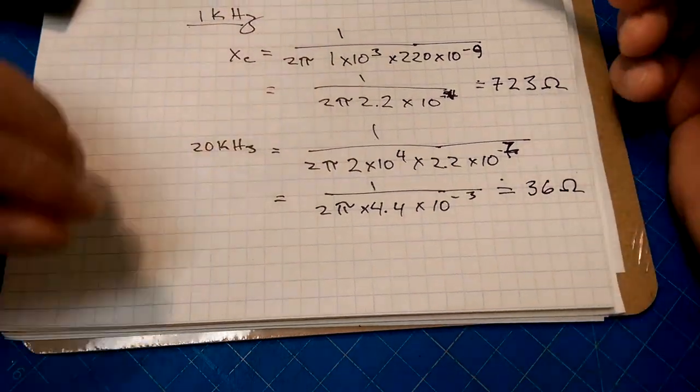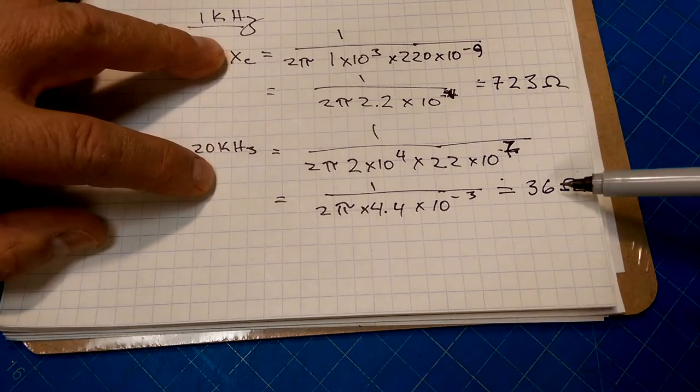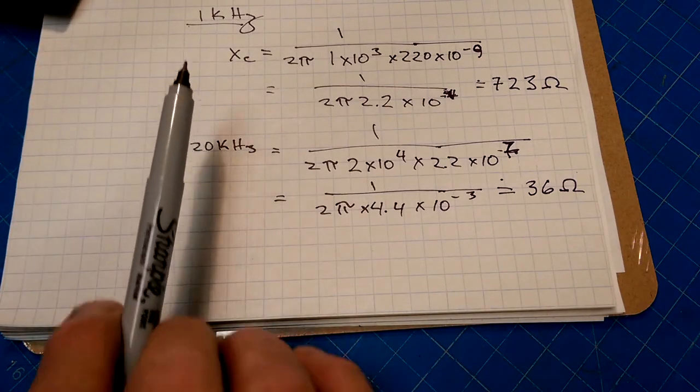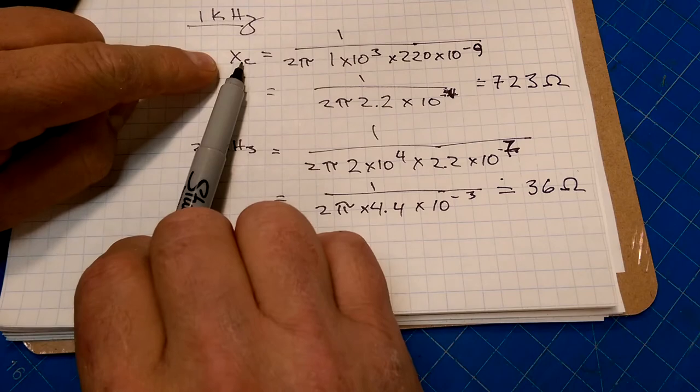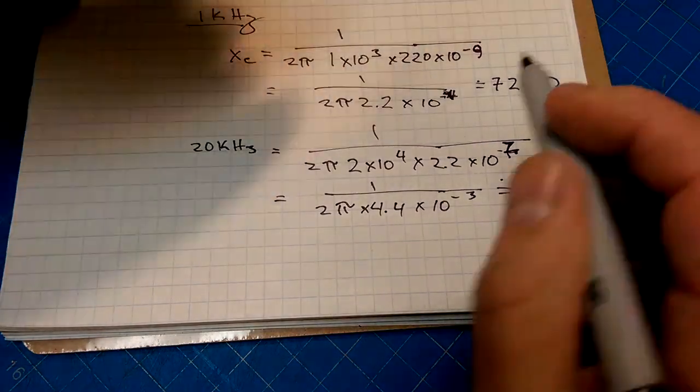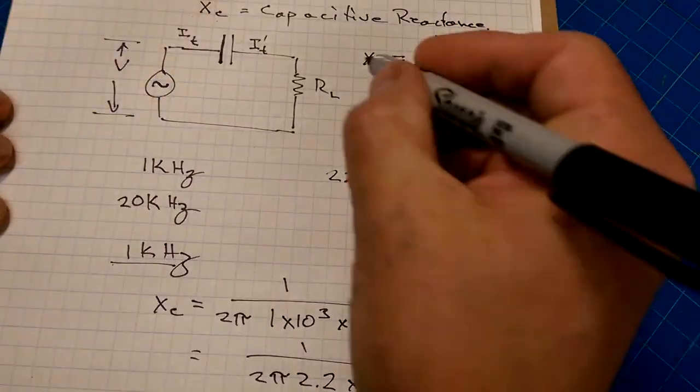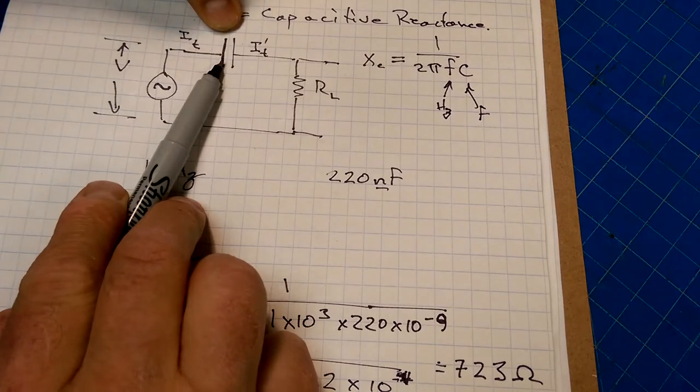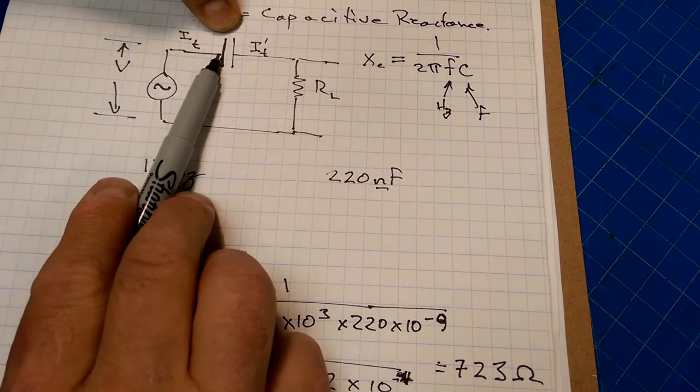So what we see is that the capacitive reactance changes depending on the frequency that you are feeding in for your signal. So if we put a sine wave in here at 1 kHz, this capacitor is going to have an effective resistance of 723 ohms. But if it's at 20 kHz, its resistance drops to 36 ohms.